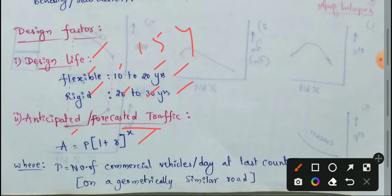The formula is: A = P × (1 + R)^X. Here, A means design traffic intensity in terms of number of commercial vehicles. P means the number of commercial vehicles per day at the last count. R means the rate of growth of traffic.